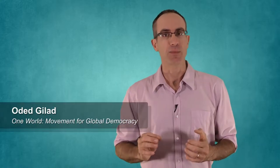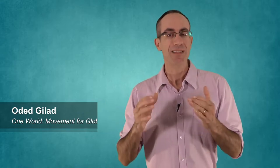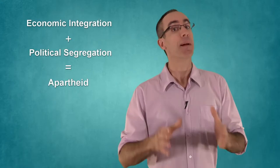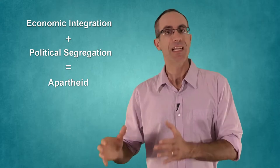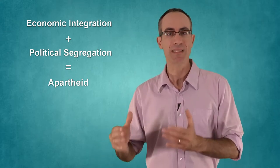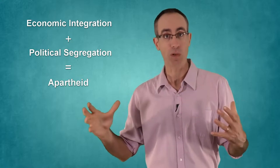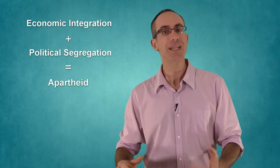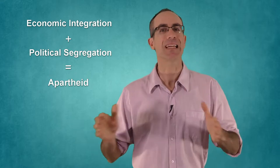The essence of the argument is that the same formula that underlined the apartheid system in South Africa of economic integration of the population and political segregation characterizes also the existing world order, where humanity as a whole is economically integrated by the global market, but politically and legally divided and segregated. To understand the analogy and the similarities, let me start with a quick review of how this formula was applied in South Africa.